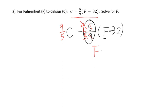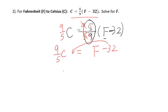So on the right side I have F minus 32, and on the left side I have 9 over 5 times C. If I want to solve for F, I need to add 32 to both sides, so I will get 9 over 5 C plus 32 equals F.